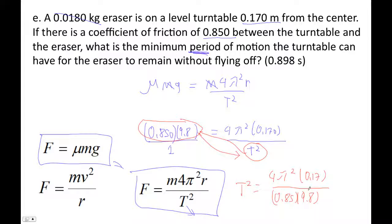I'm going 4π² times 0.17, then divided by 0.85, divided by 9.8. And I get T² is 0.80568.